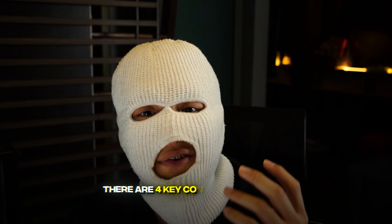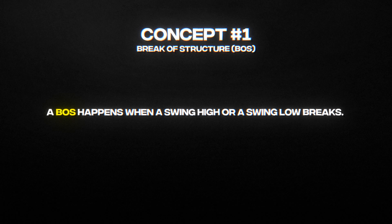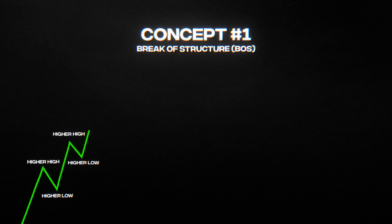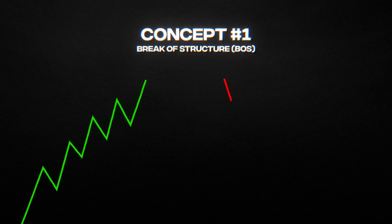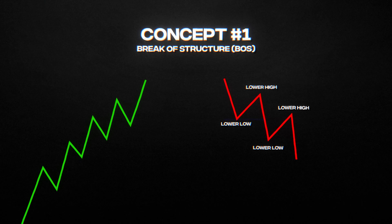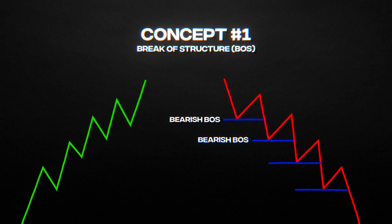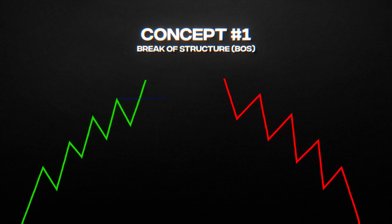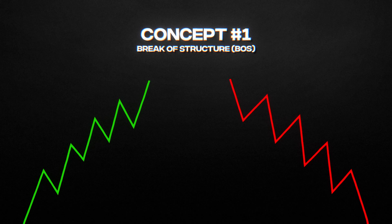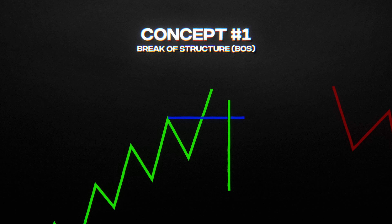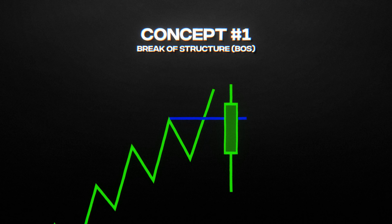Before we get started, we need to fully understand the concepts behind the strategy. There are four key concepts to master. The first concept is called break of structure. A break of structure happens when a swing high or swing low breaks. In an uptrend, higher highs and higher lows keep the market trending upwards, and each time a high gets broken, a bullish break of structure has occurred. In a downtrend, lower highs and lower lows keep the market trending downwards, and each time a low gets broken, a bearish break of structure occurs. There are two main ways of identifying a break of structure: using wicks, or using a body candle close. I personally use body candle close, as it confirms the market has enough momentum. If the break of structure occurs by a wick, I wait for the body candle close to confirm.